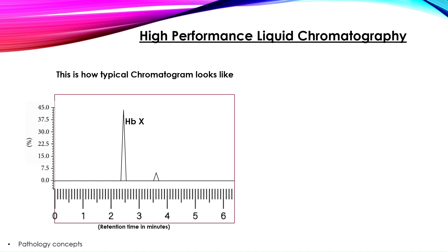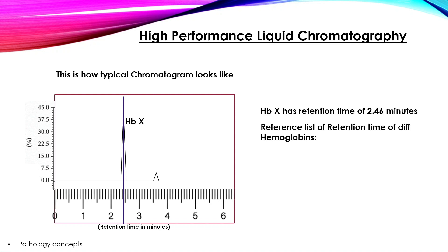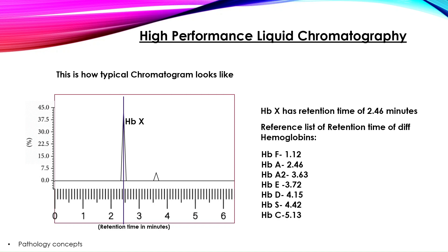Now let's assume that this peak shows HbX. It can be identified by the retention time — HbX has a retention time of 2.46 minutes. The approximate retention times are: HbF 1.12 min, HbA 2.46 min, HbA2 3.63 min, HbE 3.72 min, HbD 4.15 min, HbS 4.42 min, HbC 5.13 min. Since the retention time is 2.46 minutes, HbX is HbA — adult hemoglobin.